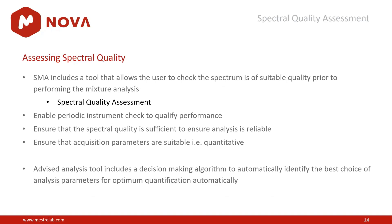Two additional tools fit into this workflow: the first is SQA — Spectral Quality Assessment — which checks the quality of data and its suitability for quantification. It can be run every time you run an SMA experiment or periodically to check instrument performance, ensuring spectral quality is sufficient for the analysis and that acquisition parameters are suitable for quantification. The second is the Advice Analysis Tool, an algorithm that decides how to best process the data on the basis of spectrum parameters for optimal automation. So the system can self-quality-check and make decisions about optimal processing.